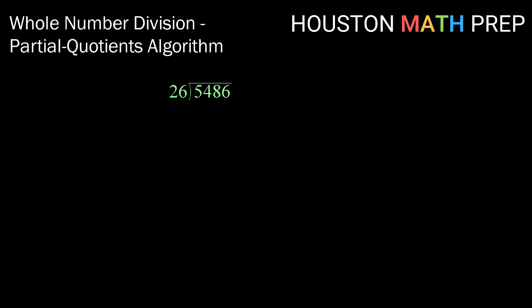In this case, the largest multiple that we can fit is 100 times 26. So we'll subtract that away to get a result of 2,886. Now we'll go through that process again. What's the largest multiple of 26 that we can subtract away? In this case again, 100 times 26.